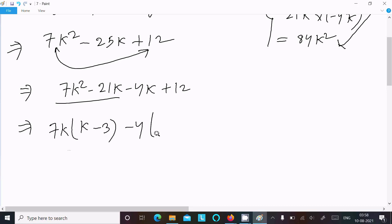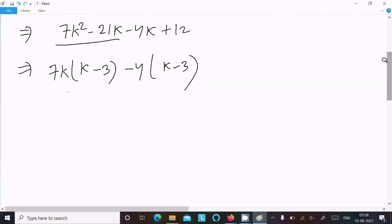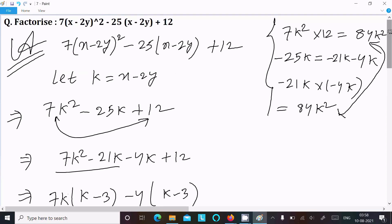Now take here the common. 7k is the common, so this is k minus 3. Minus 4 is the common, so k minus 3. After that k minus 3 is the common, take this. Now here you can get 7k minus 4.